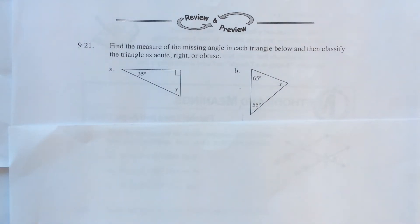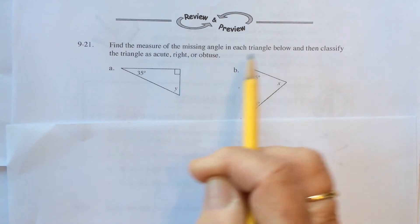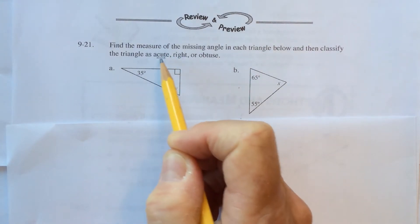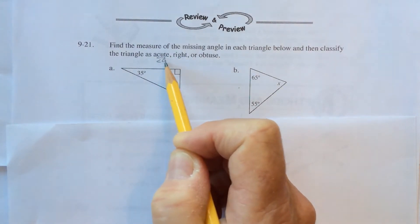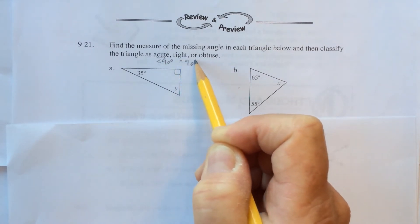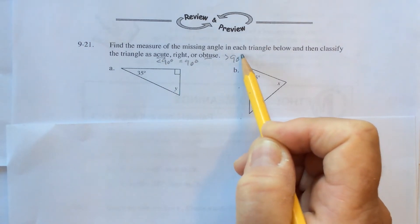Let's take a look at number 21 and 22. Find the measure of each missing angle in the triangle below and then classify it as acute, meaning less than 90 degrees, right, meaning equal to 90 degrees, or obtuse, meaning greater than 90 degrees.